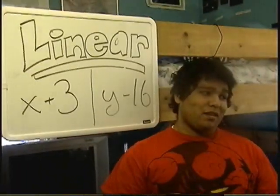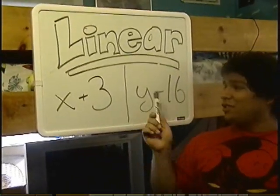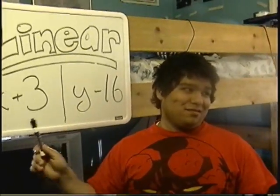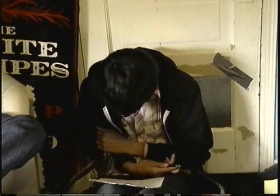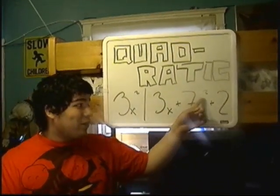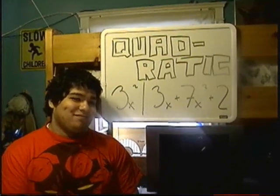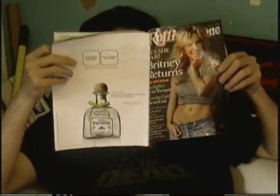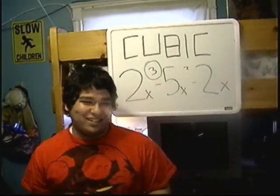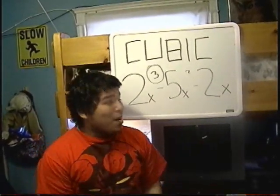Linear polynomials have a degree of only one — no squared or cubed terms. Quadratic is a polynomial with a degree of two. When a student asks if it can have a degree greater than two, the professor says no. Cubic polynomials, unlike their quadratic and linear counterparts, have degrees of three — not two, not one, but three.